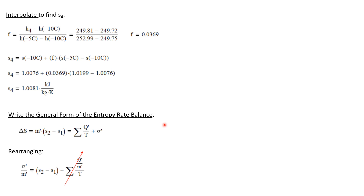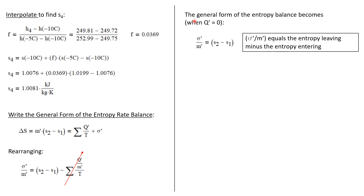Now we can write a general entropy rate balance. Delta S can be written as the mass flow rate times the change in specific entropy, equal to the sum of entropy transferred into the system plus the rate of entropy production. Rearranging and dividing by the mass flow rate, the rate of entropy production per unit mass flow rate equals the change in specific entropy minus the summation of Q dot over M dot divided by temperature. Since Q dot is zero, this whole term disappears, leaving sigma dot over M dot equal to the change in specific entropy.